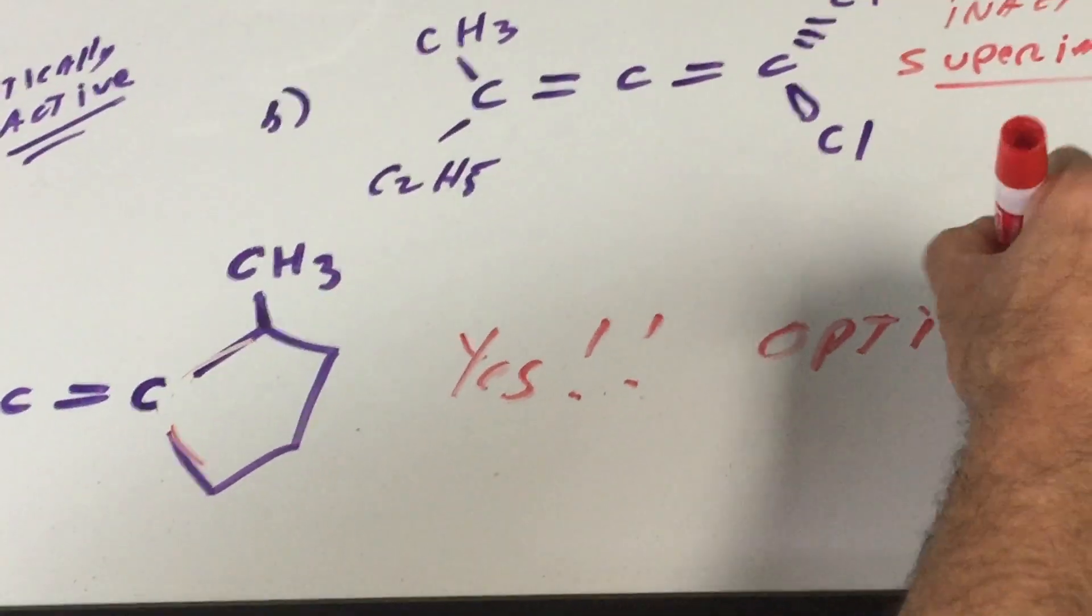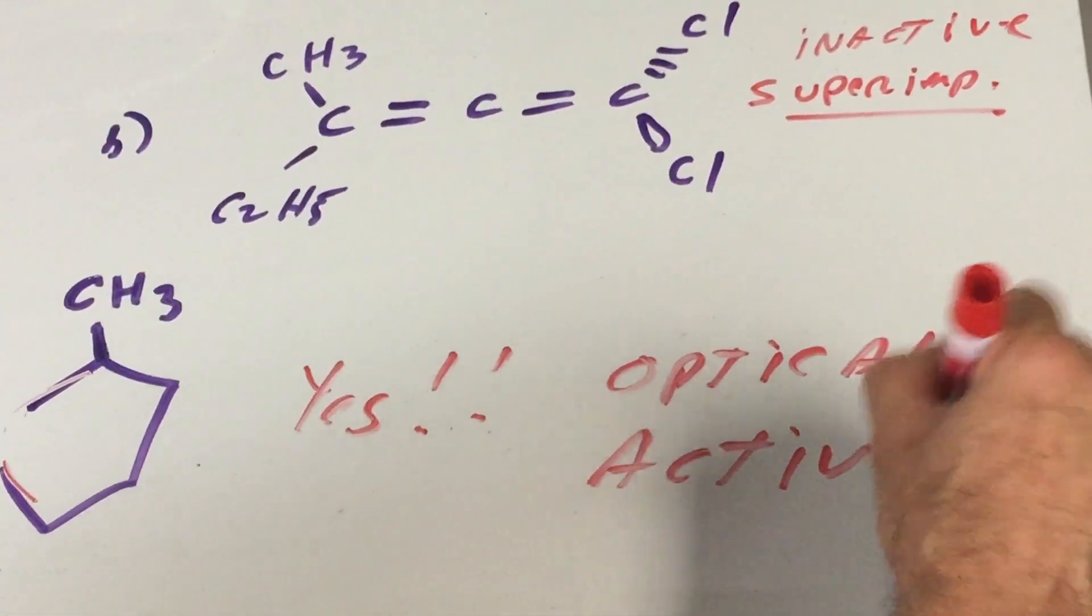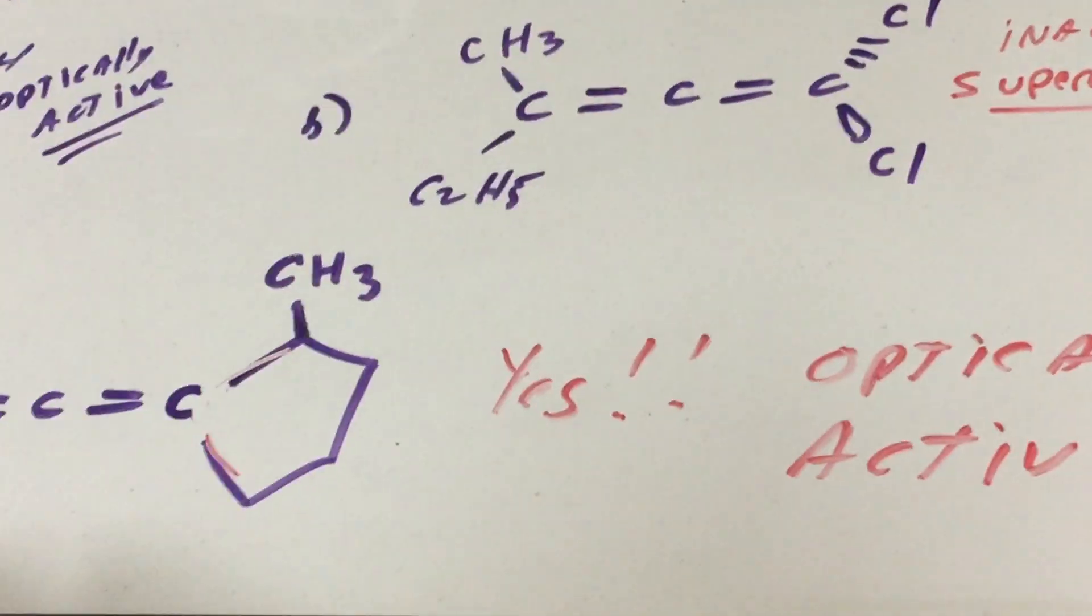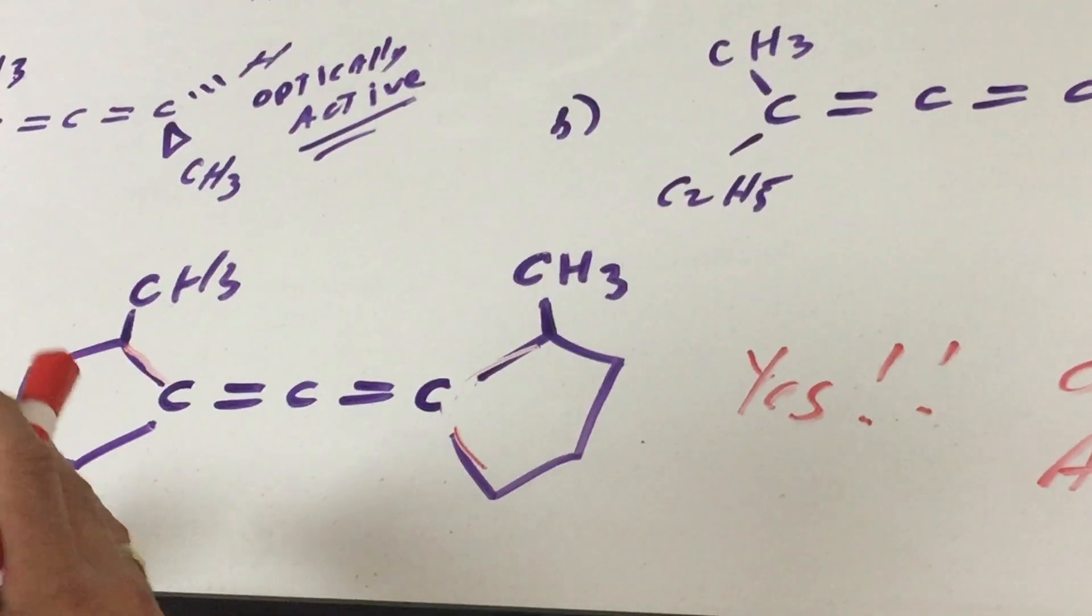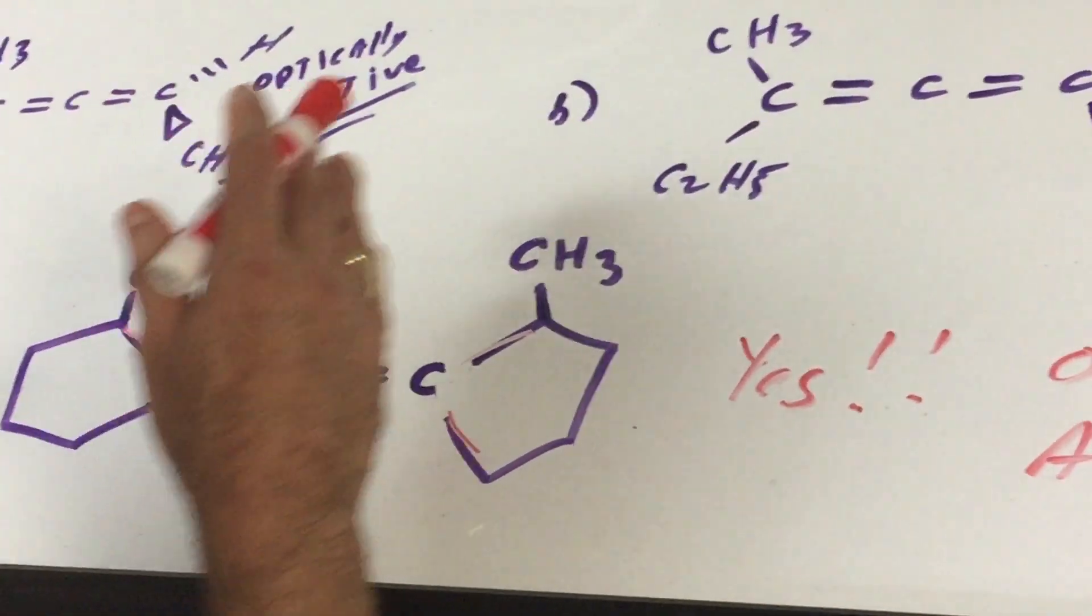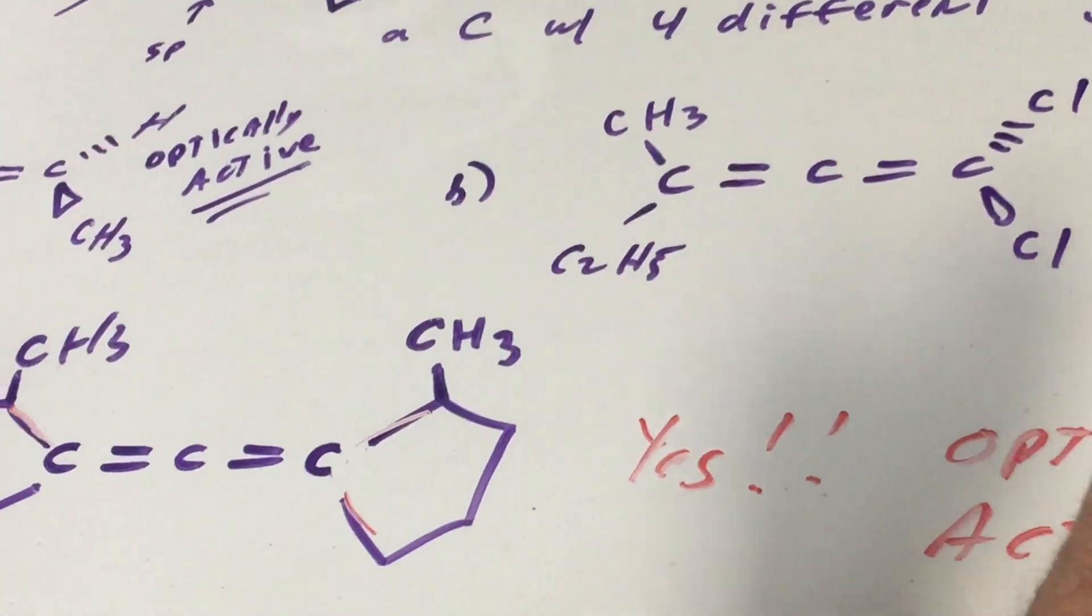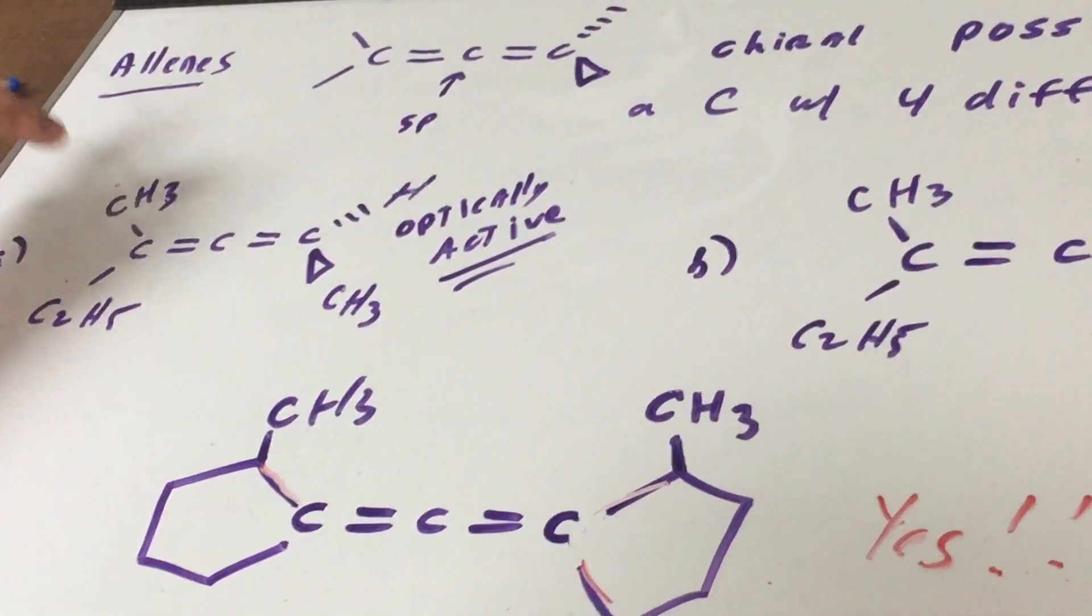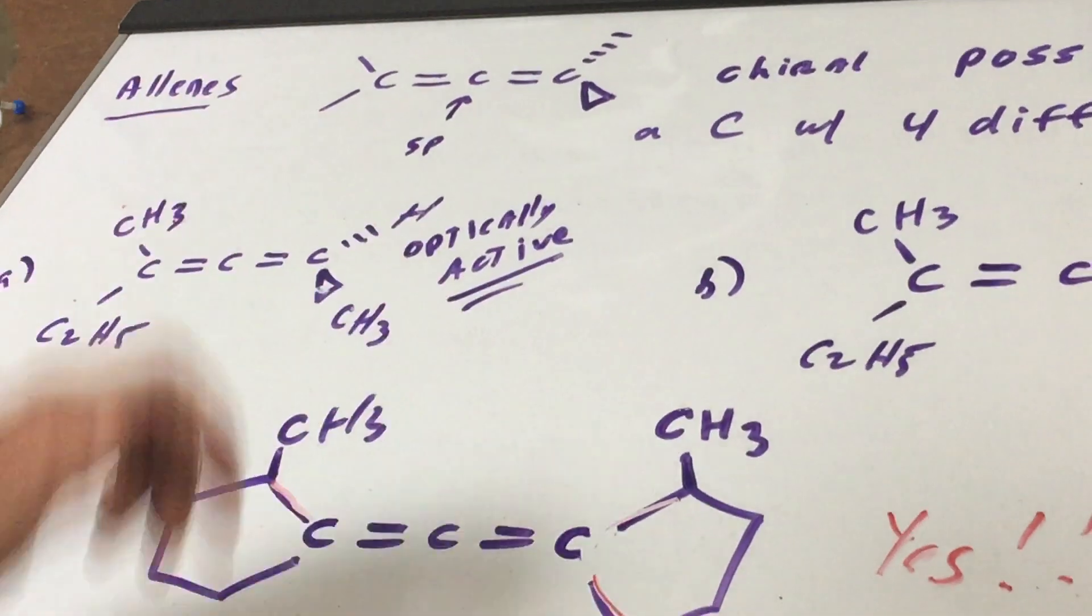This guy would be optically active. So as you can see it is possible to have optical activity in a molecule that has carbons but there's no four different groups attached. So if you looked at this and said well I don't see any four different groups attached to one carbon. No but it's called an allene.